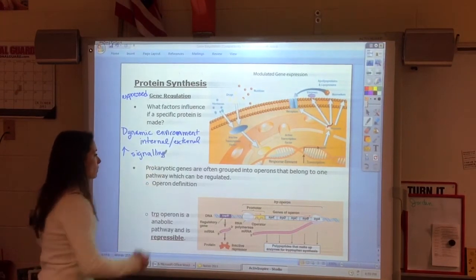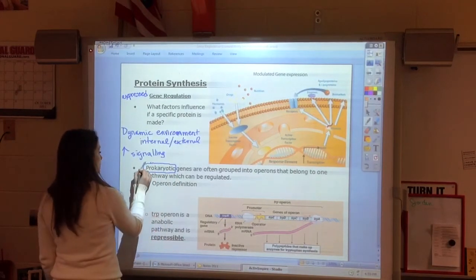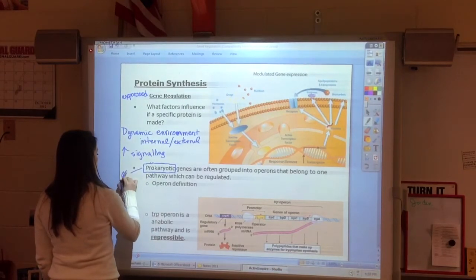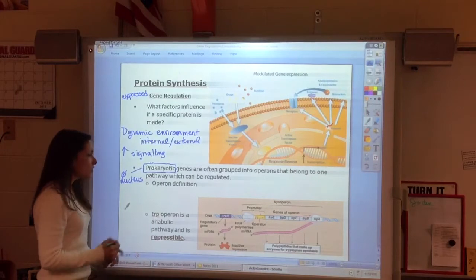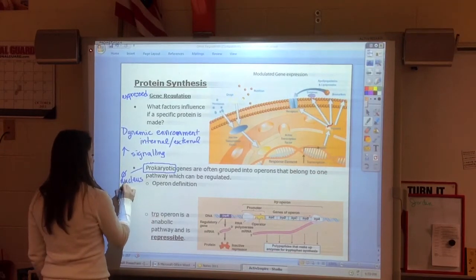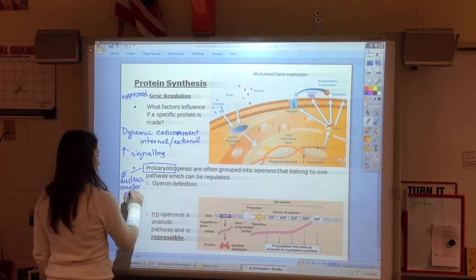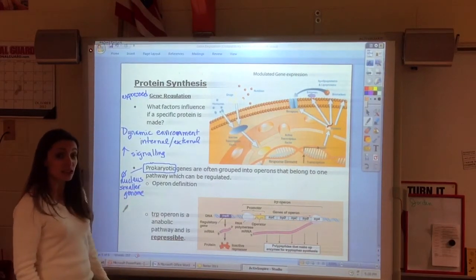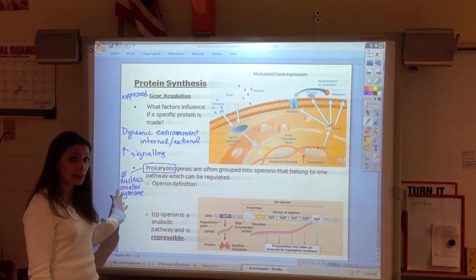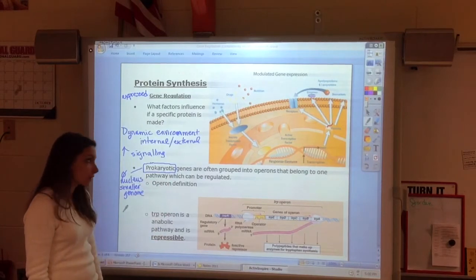What we look at when we look at a prokaryote is we do need to remember a few things. We need to remember that there is no nucleus, and usually there is a smaller genome, meaning there are less genes in a bacteria, a prokaryotic bacteria or an archaea, than there are in the eukaryotic organisms.